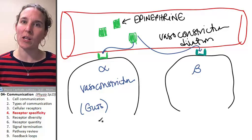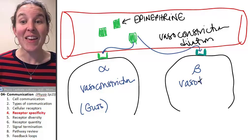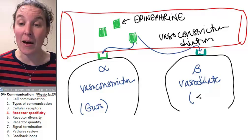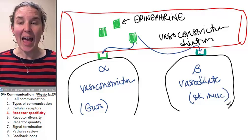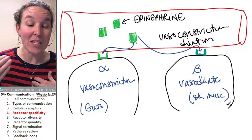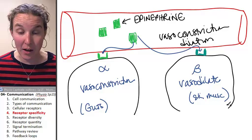Where would you rather have your blood going if you are running away from the bear? Let's vasodilate in the skeletal muscles. I want to vasodilate in skeletal muscles but vasoconstrict in the guts, but I want one molecule to stimulate all of that.